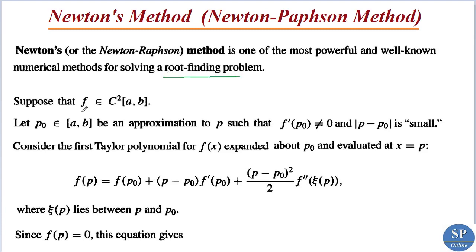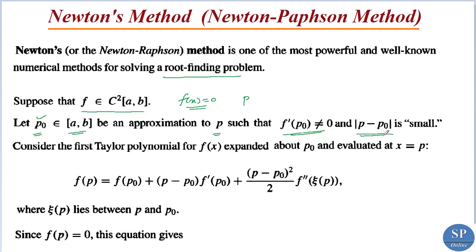Suppose that f belongs to C²[a,b], that is, f is a twice continuously differentiable function. Our aim is to find the root of the equation f(x) = 0. Let p₀ belong to [a,b] be an approximation to p, where p is the root of this equation, that is f(p) = 0.